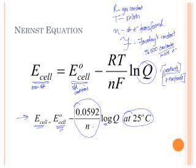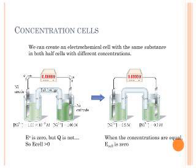Now there is one really interesting application that comes out of the Nernst equation. The Nernst equation tells us that we can make a concentration cell. We can build a galvanic cell with the same substance in both half cells if the concentrations of the solutions in those half cells are different.